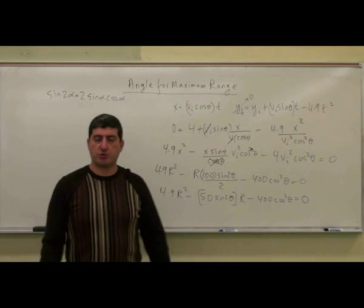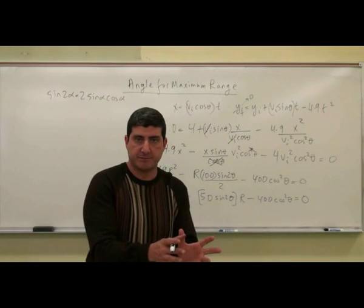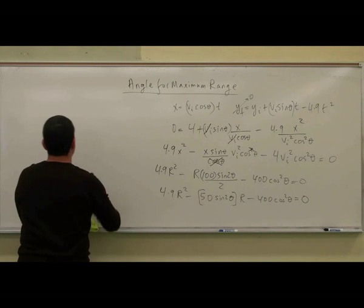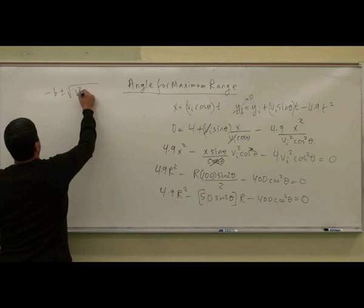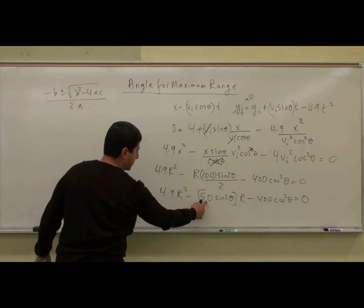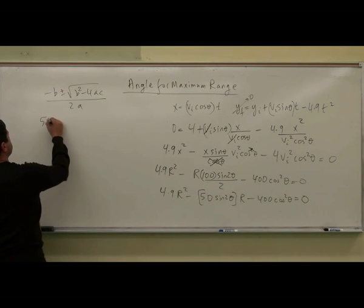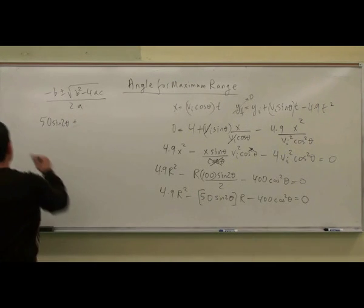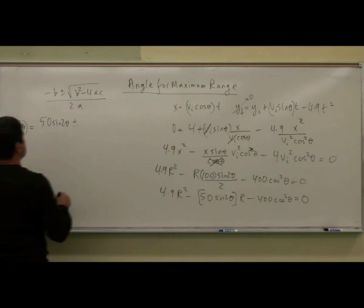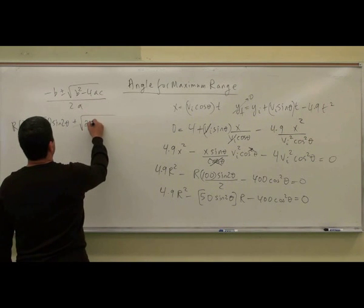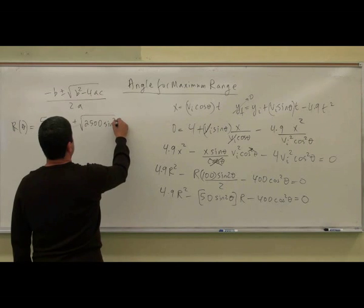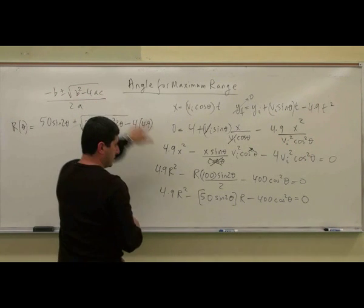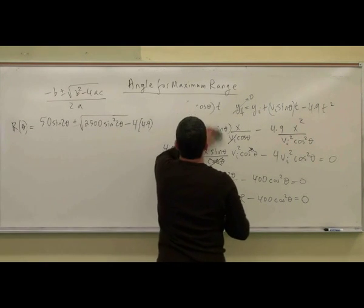So what angle maximizes the range? I need to solve for r as a function of theta using the quadratic formula, then take the derivative of that equation and set it equal to zero. The quadratic formula gives: r(θ) equals [50 sine(2θ) plus the square root of (2500 sine squared(2θ) plus 4 × 4.9 × 400 cosine squared(θ))] divided by 2 × 4.9 = 9.8. The negative-negative becomes a plus inside the square root.